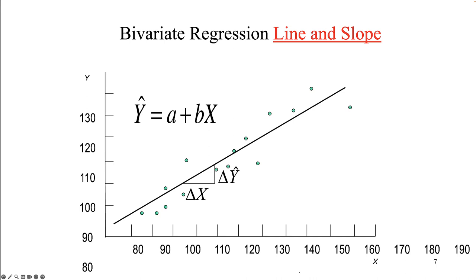Rather than eyeballing it, regression finds the line of best fit, represented by y-hat — the expected value of every dot's y value. Each dot also has an observed y value. There is a difference between the expected value of y (y-hat, the line) and the actual observed value of y (the dots on the scatter plot). The a value is the y-intercept where the line intersects the y-axis. The b value is the slope of the line, which is rise over run — the change in y over the change in x, indicated by the Greek symbol delta.